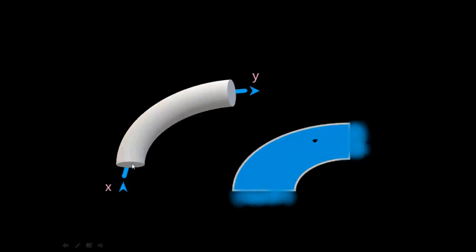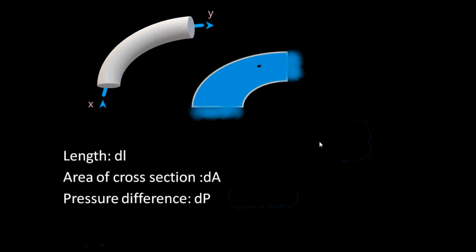Imagine a fluid passing through a pipe from x to y. Let's take a very small infinitesimal part of this fluid whose length is dl and area of cross-section is dA. Even though the fluid part is so small, there will be a small pressure difference between the ends, which is why the fluid is moving.